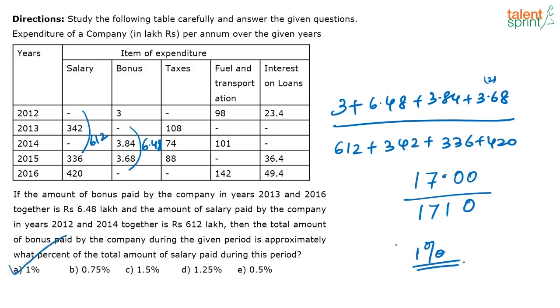So the correct answer is option A. Don't approximate too much. These additions are easy — if you use the digit sum method, you will get closer values.